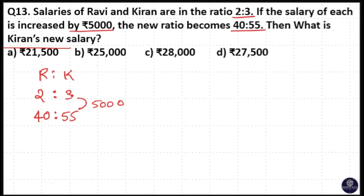Here 3 and 55, difference between 3 and 55 is equal to 52 and difference between 2 and 40 is equal to 38. So this is not constant.